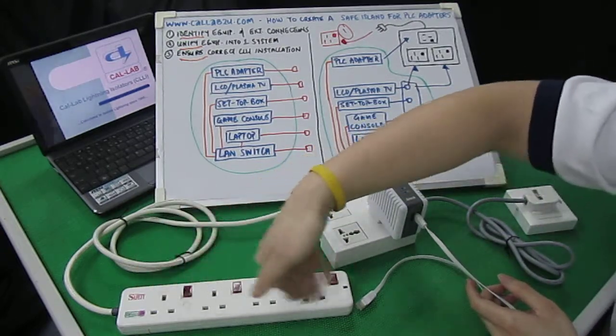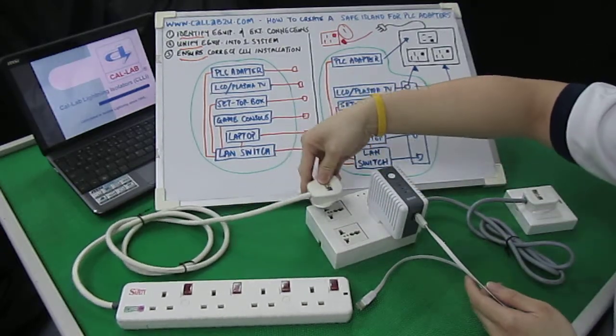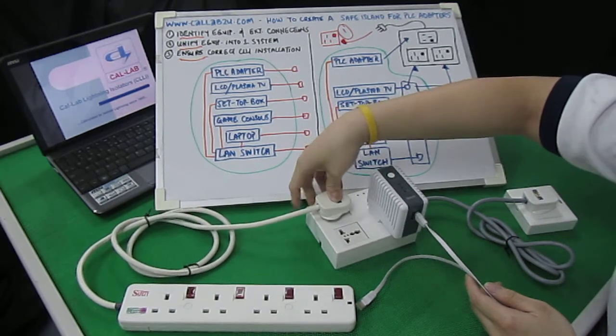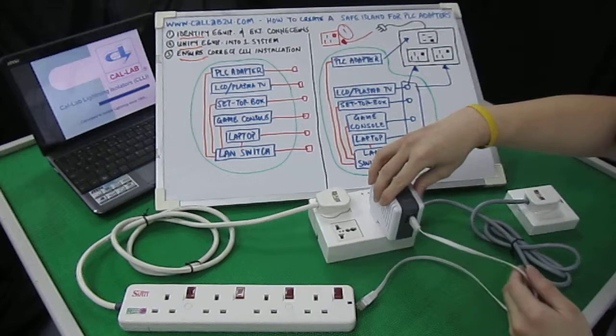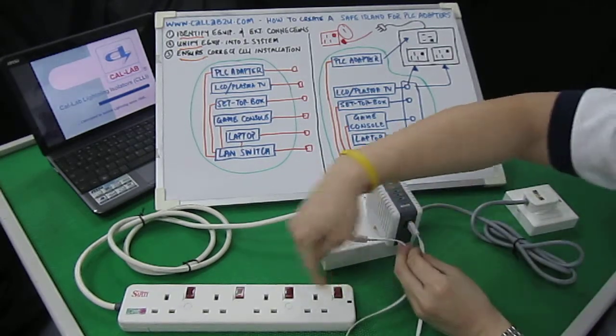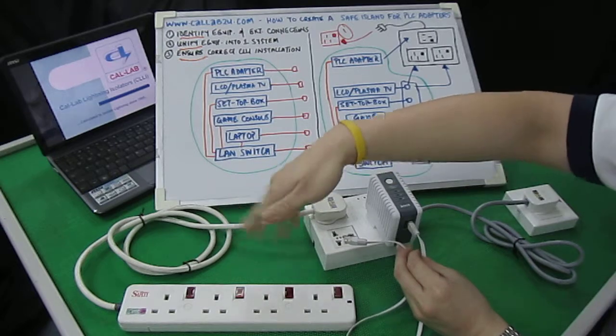The extension or interconnected equipment power supply can be used either here or here, which is the remaining two sockets. And of course the LAN cable will be connected to whatever interconnected equipment you have in that setup.